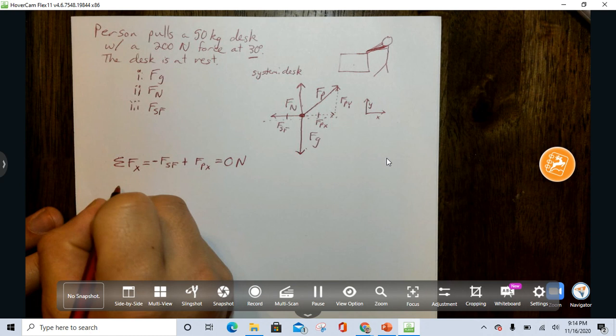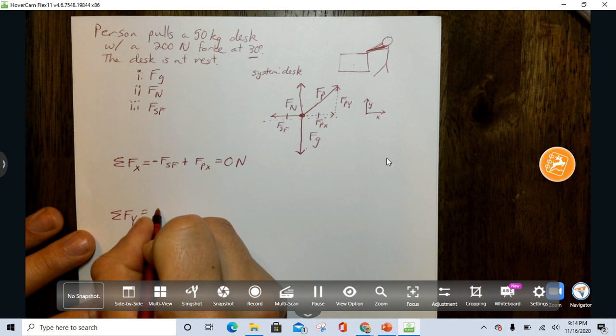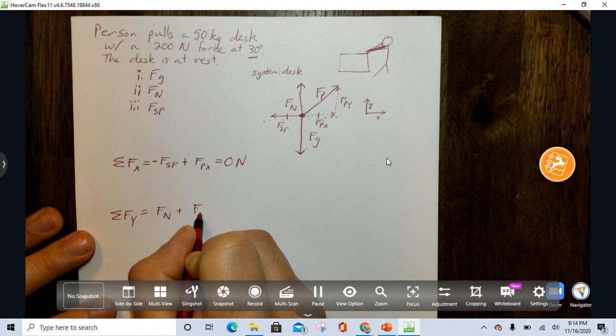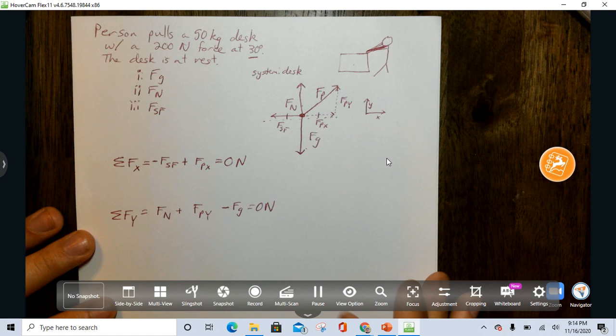Let's also do the sum of the forces in the Y direction, which we're going to add all these components up. So we've got a positive normal force, we've got a positive FPY, and we have a negative FG, and if it's not moving, this is also equal to zero newtons.